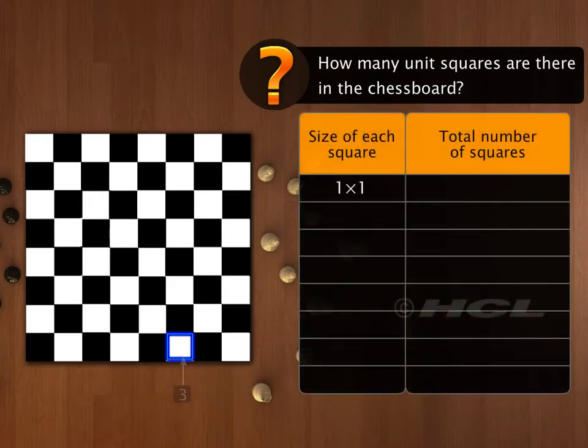There are eight unit squares in a row, and there are eight rows. So, on multiplying 8 by 8, we get a total of 64 squares.